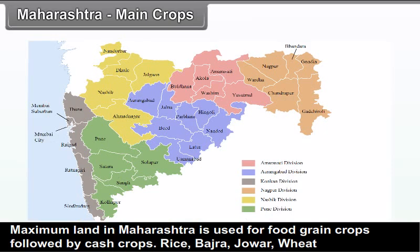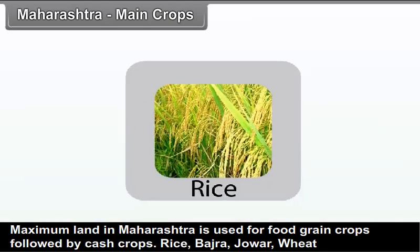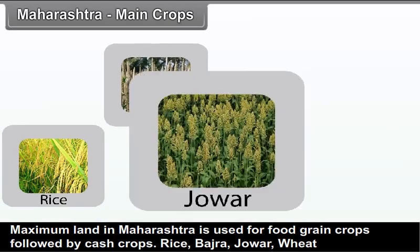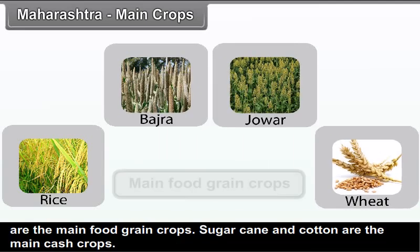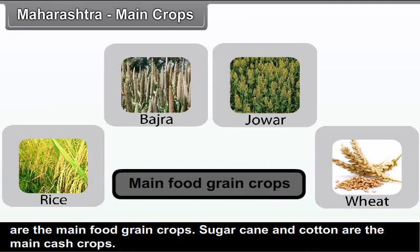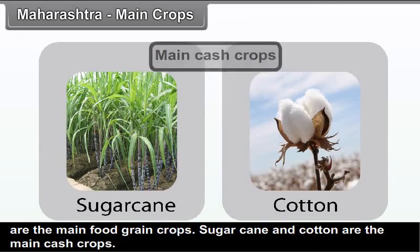Maximum land in Maharashtra is used for food grain crops, followed by cash crops. Rice, Bajra, Jowar, and Wheat are the main food grain crops. Sugarcane and cotton are the main cash crops.